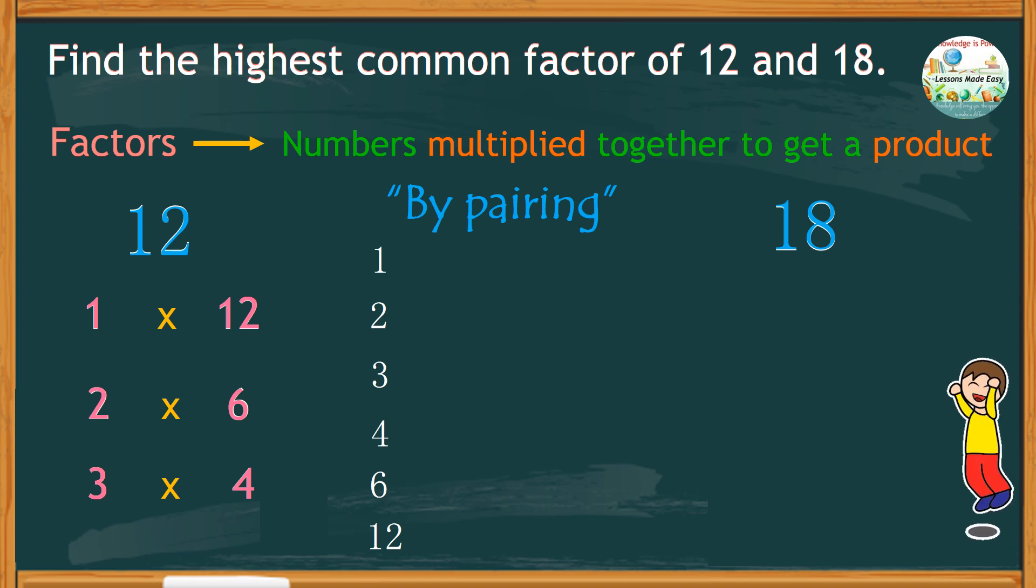Do the same with 18. Let's find pairs of numbers multiplied together to give us a product of 18. We have 1 times 18, or 18 times 1, 2 times 9, or 9 times 2, and 3 times 6, or 6 times 3. So these are the factors of 18. We have 1, 2, 3, 6, 9, and 18 itself.